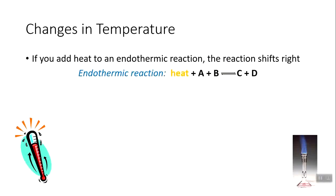Now let's look at changes in temperature. We need to know the difference between endothermic and exothermic. Endothermic means heat is absorbed — heat is part of the reactants; exothermic means heat is released — heat is part of the products. In a reaction, it might look like: heat + A + B → C + D for endothermic, or the reaction might show delta H as positive. For exothermic, heat appears on the product side or delta H is negative.